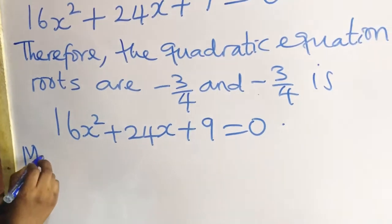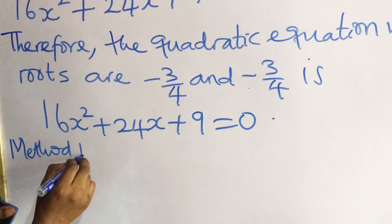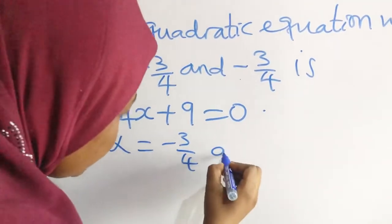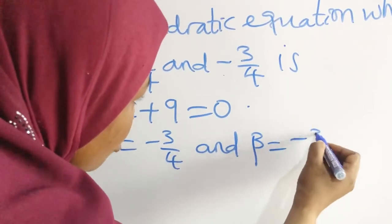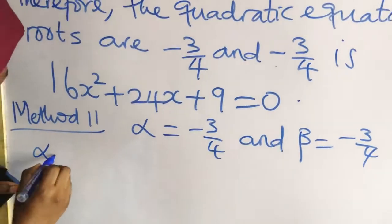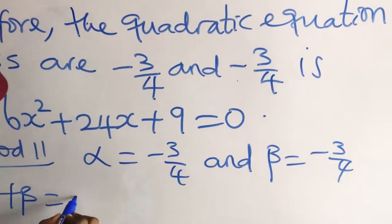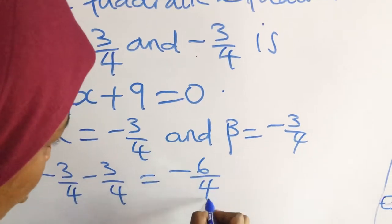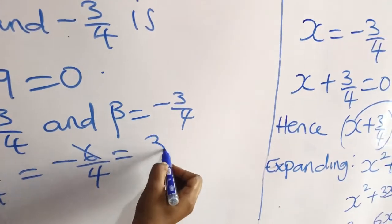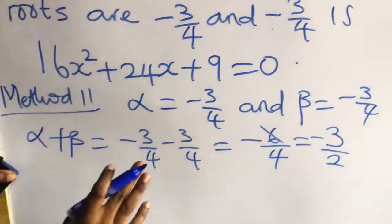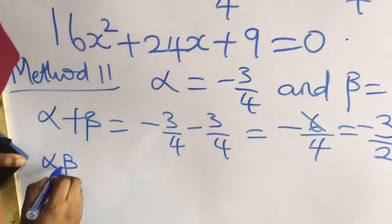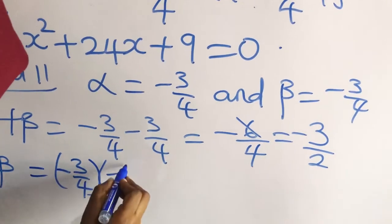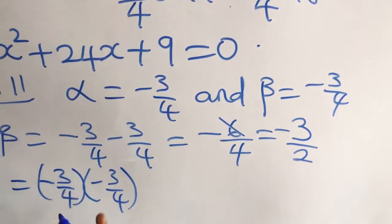Method 2: We need the sum of roots. Alpha is equal to minus 3 over 4 and beta is also minus 3 over 4. Alpha plus beta, that is sum of roots, will be equal to minus 3 over 4 minus 3 over 4, which equals minus 6 over 4. Simplifying, that is minus 3 over 2. Alpha times beta, the product of roots, will be equal to minus 3 over 4 multiplied by minus 3 over 4. Negative times negative is positive, so 3 times 3 is 9 over 16.